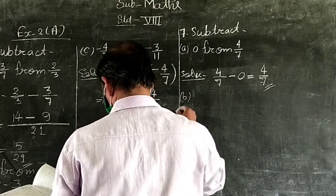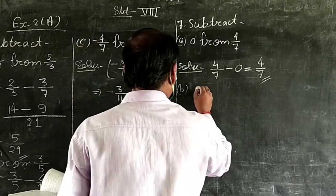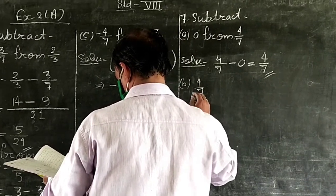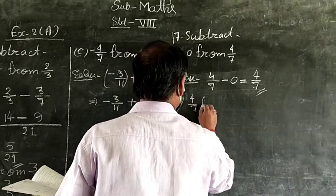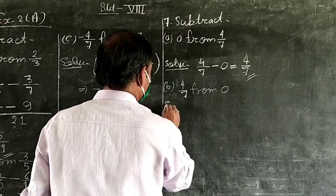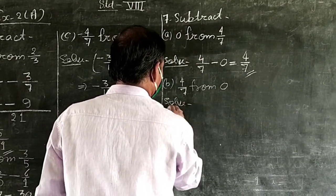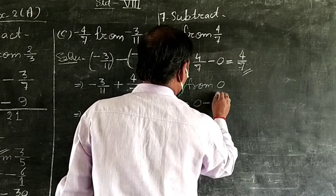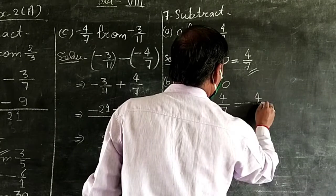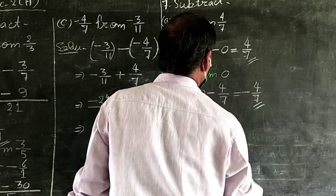Part B: 4 upon 7 from 0. Solve: 0 minus 4 upon 7 equals minus 4 upon 7. Answer.